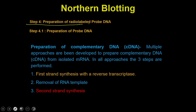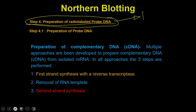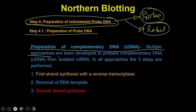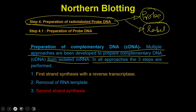In step 4, you prepare the radiolabeled probe DNA. This step has two events: first, you design and prepare the probe; second, you label the probe with radioactivity. We are discussing using the probe as DNA. There are multiple approaches to prepare complementary DNA, but in all approaches you perform three steps.